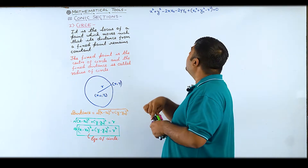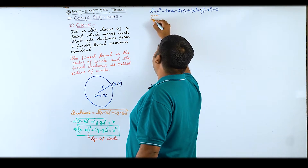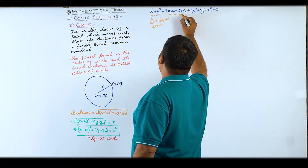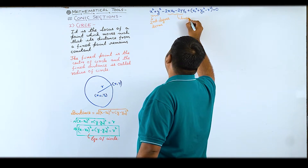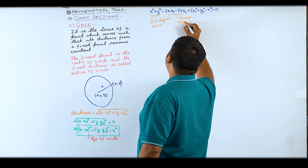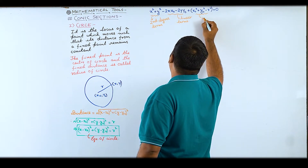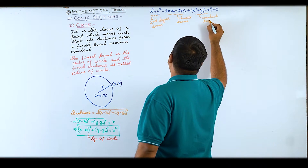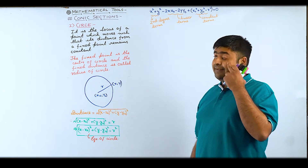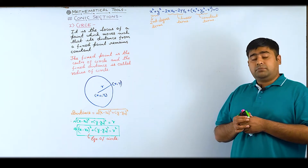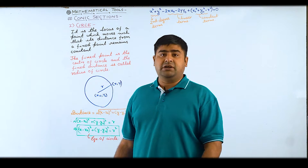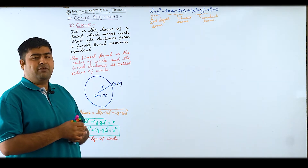In this expanded form, x² and y² are the second degree terms; the terms -2x·x₀ and -2y·y₀ are the linear terms; and the remaining part is the constant term. So in a circle, we have two second degree terms, two linear terms, and a constant term. This is the general equation of a circle.